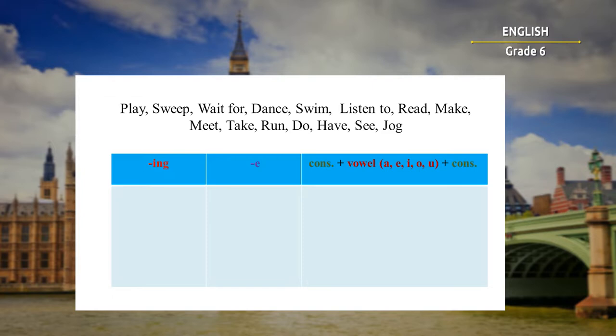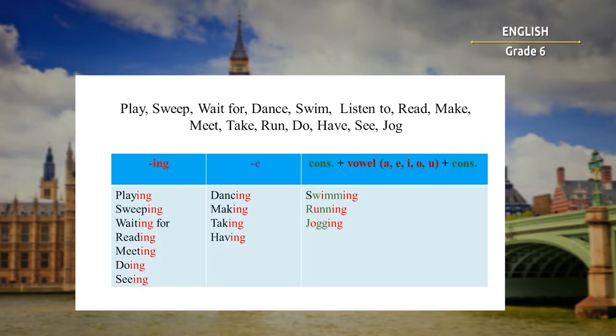How are you doing, children? Let's check the answers together. In the first column we put the verbs: playing, sweeping, waiting for, reading, meeting, doing, and seeing. In the second column we have: dancing, making, taking, and having. And in the last column: swimming, running, and jogging. Perfect! I hope you have successfully completed the task. If you had mistakes, it's okay, because everything comes with practice.